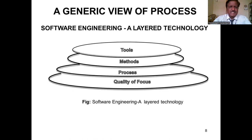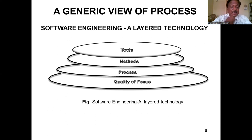Software can be viewed as a layered technology. There are four layers: the bottom layer is quality focus, the next layer is process, the next is method, and the final layer is tools.